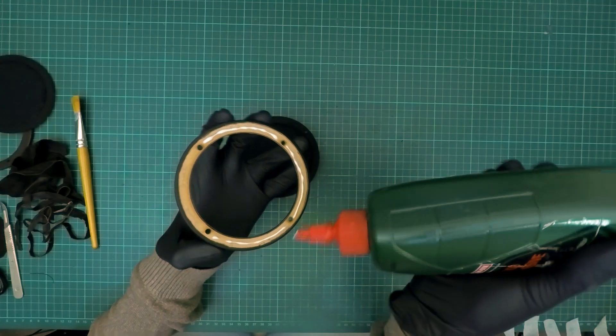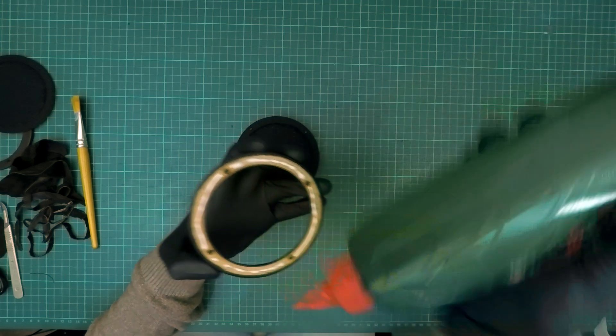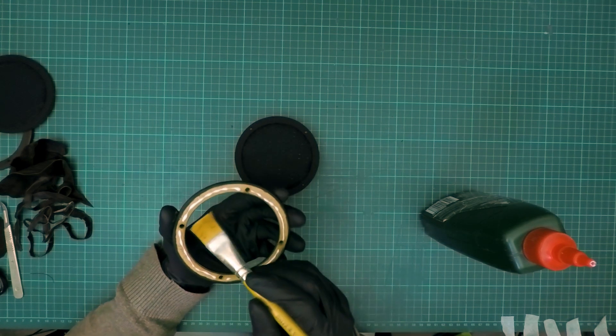Apply wood glue or PVA glue to the area marked glue on the back of the front ring, and make sure to spread it evenly using a brush.